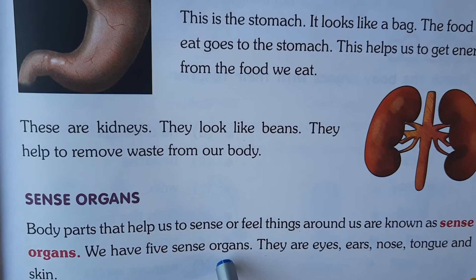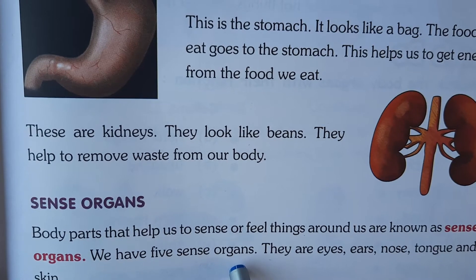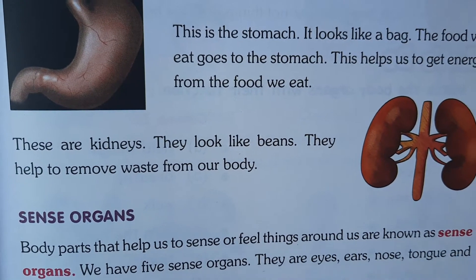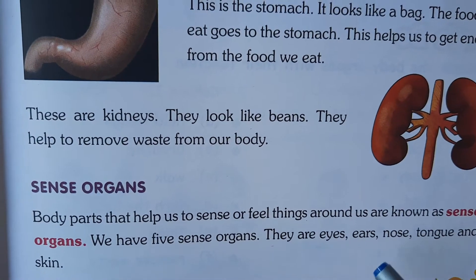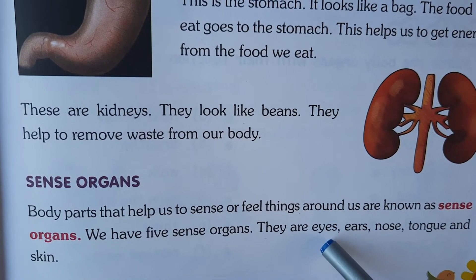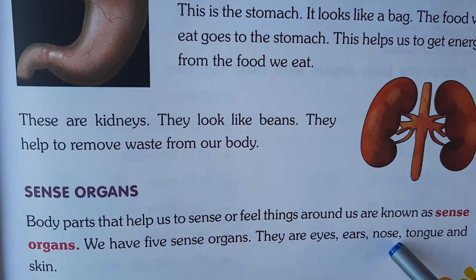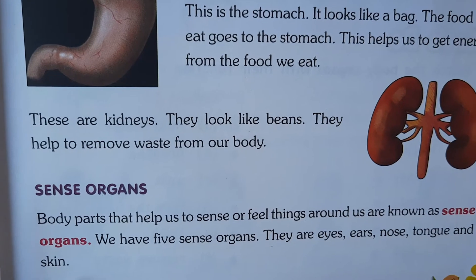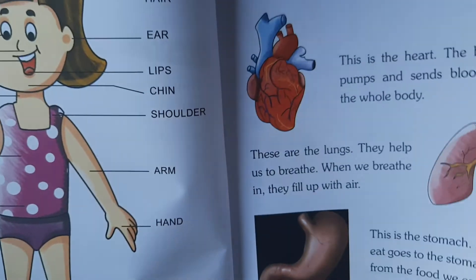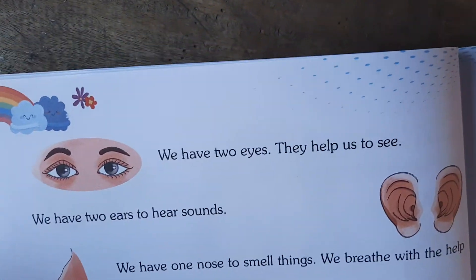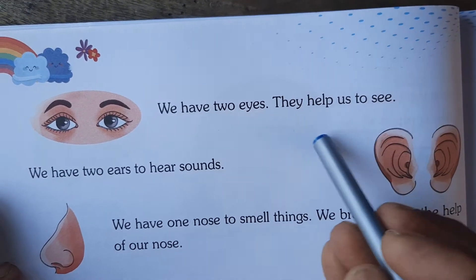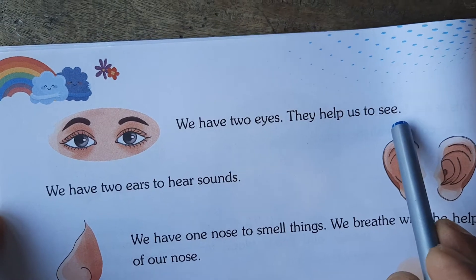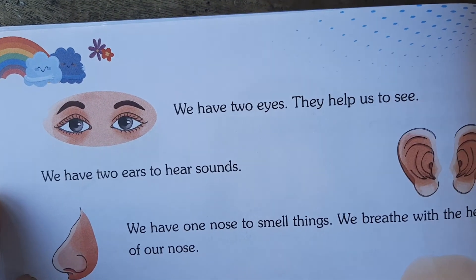We have five sense organs: eyes, ears, nose, tongue and skin. We have two eyes that help us to see. We have two ears to hear sounds.